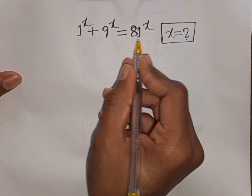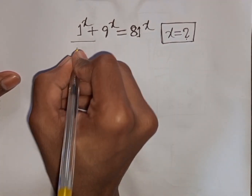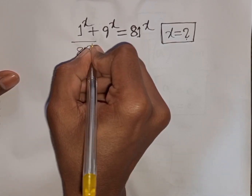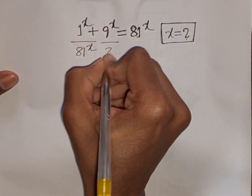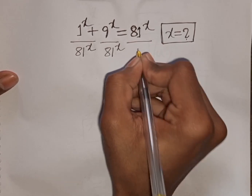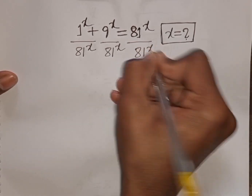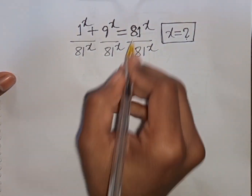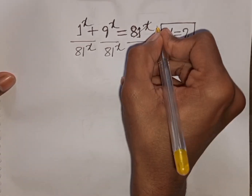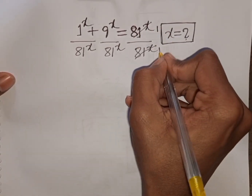First, we divide both sides by 81 power x. So dividing by 81 power x on both sides, this term will be cancelled, leaving 1 here and 1 here.